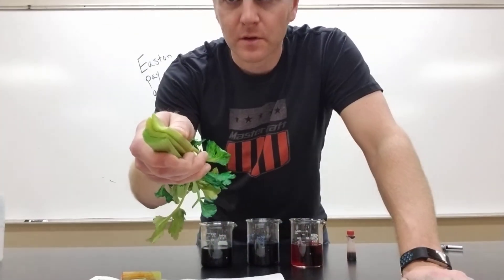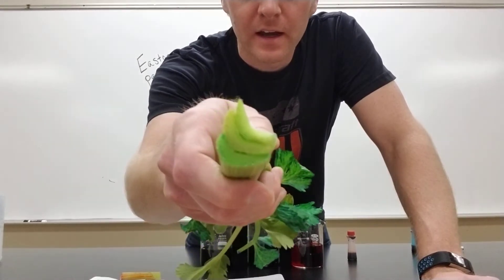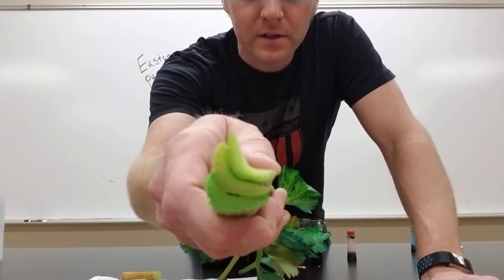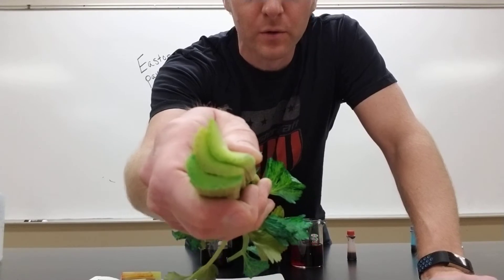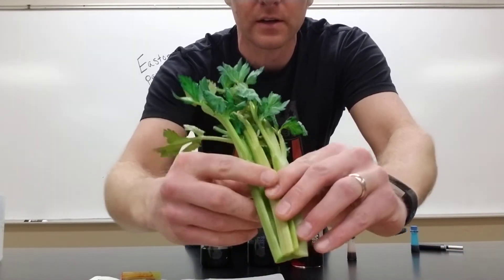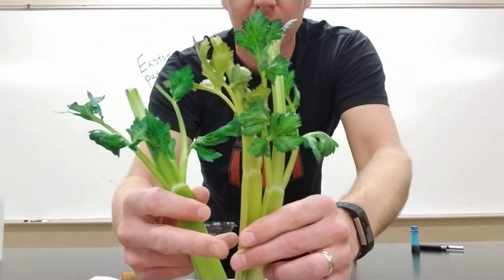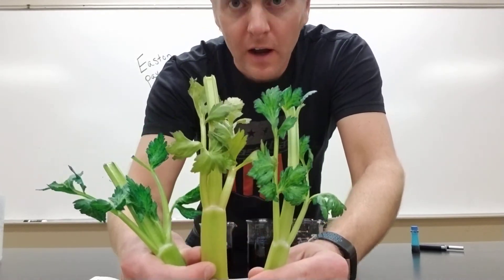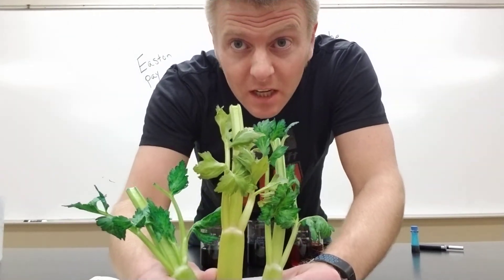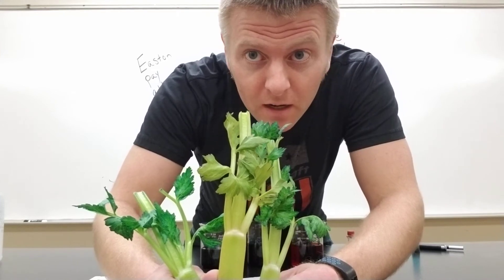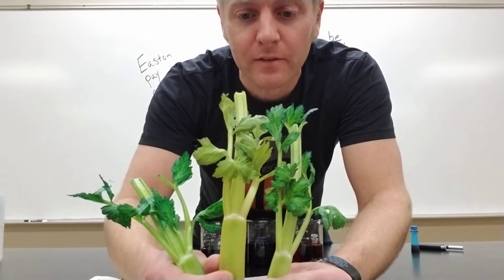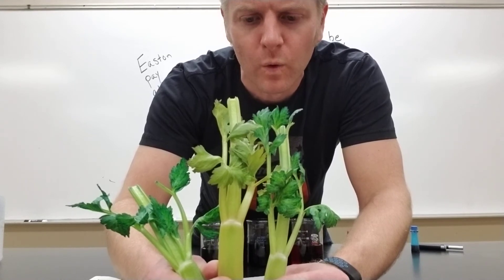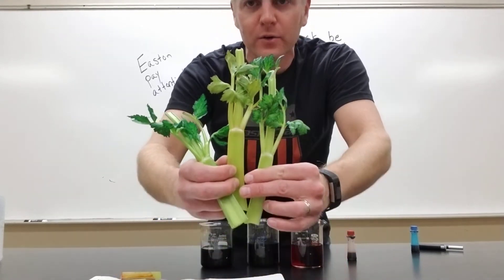I'm going to bring that in nice and close. You can see how that middle one's a little bit more red; the other ones are more blue. Or another way to look at it is just look at the difference in leaf color. So what you need to figure out for me — is this creepy yet?